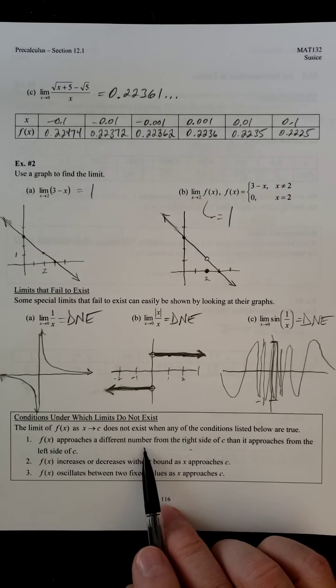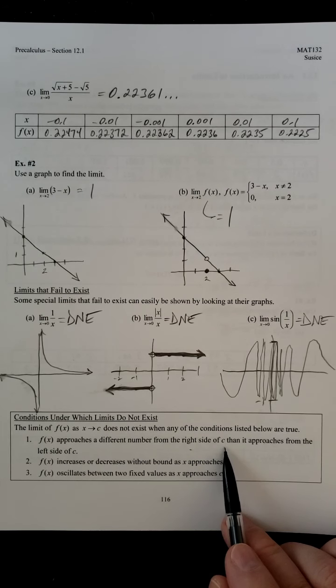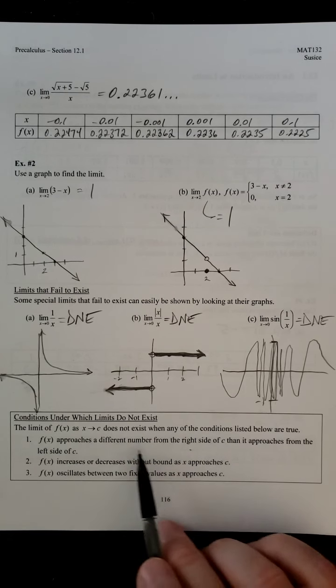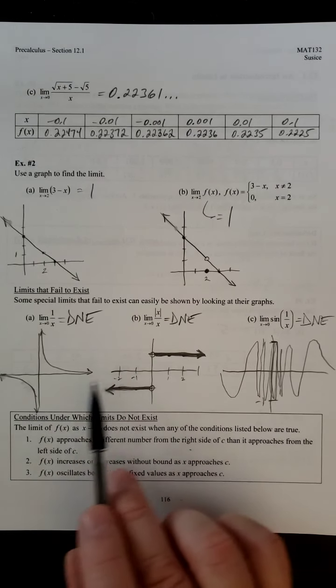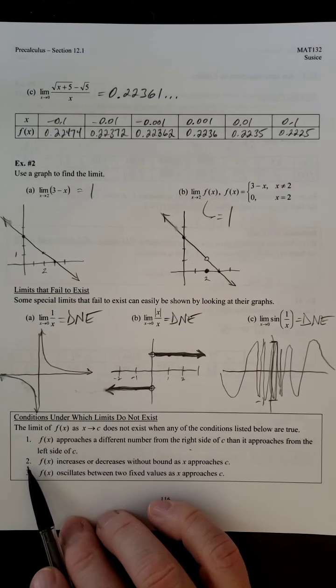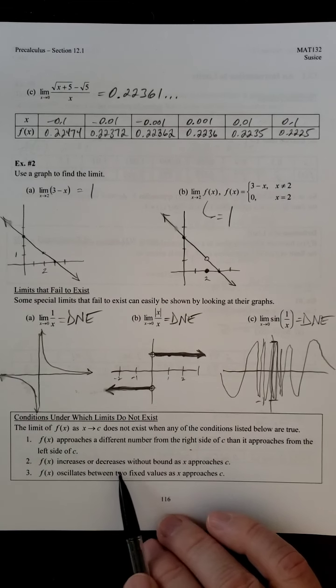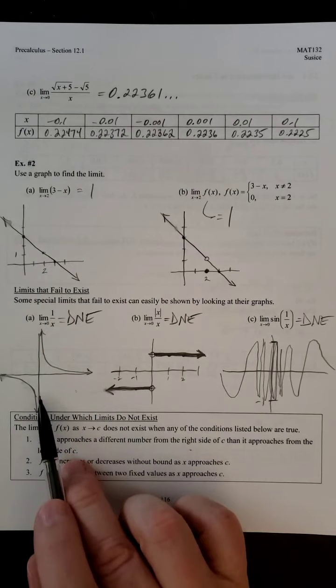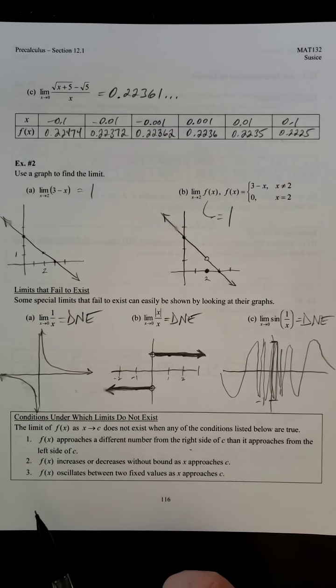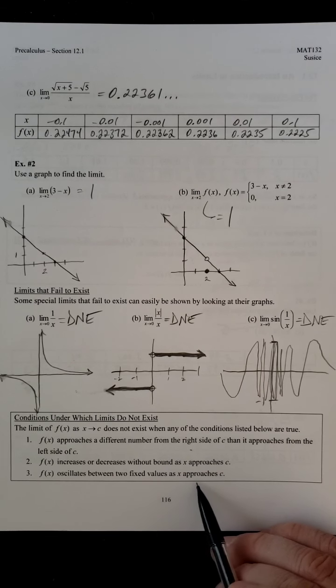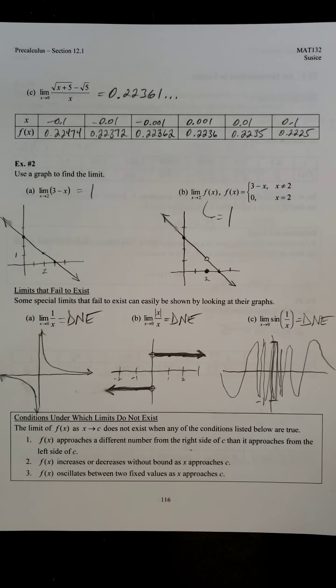f of x approaches a different number from the right side of c than it approaches from the left side. So that was really the problem with both of these ones. They approach different values from either side. Number two, f of x increases or decreases without bound as x approaches c. So really that's the first one also. And then number three, f of x oscillates between two fixed values as x approaches c. So again, that was the last one.